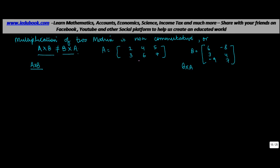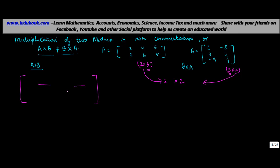When we talk about the order of these matrices, A is 2 rows by 3 columns, and B is 3 rows by 2 columns. Given that the columns in the first matrix equal the rows in the second matrix, multiplication can be done. When you multiply A by B, the resulting matrix will be of order 2×2.